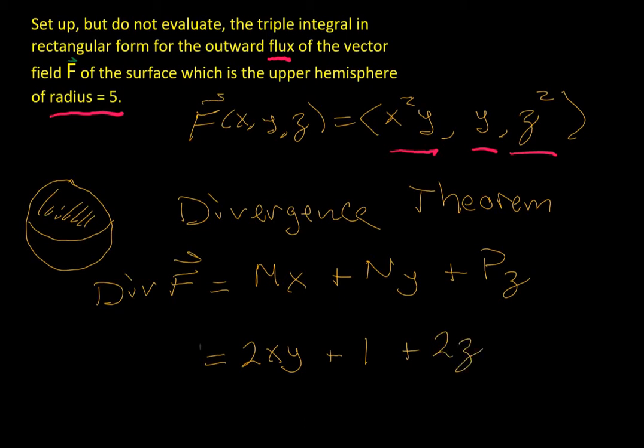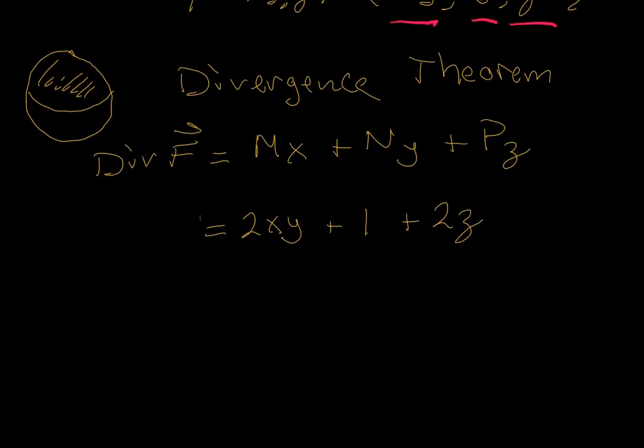Pretty straightforward. The hemisphere, remember when we look at things in two dimensions, looking at the side or top view is helpful. So the top view is just going to be a circle of radius 5. And then the side view will also look like a circle of radius 5.